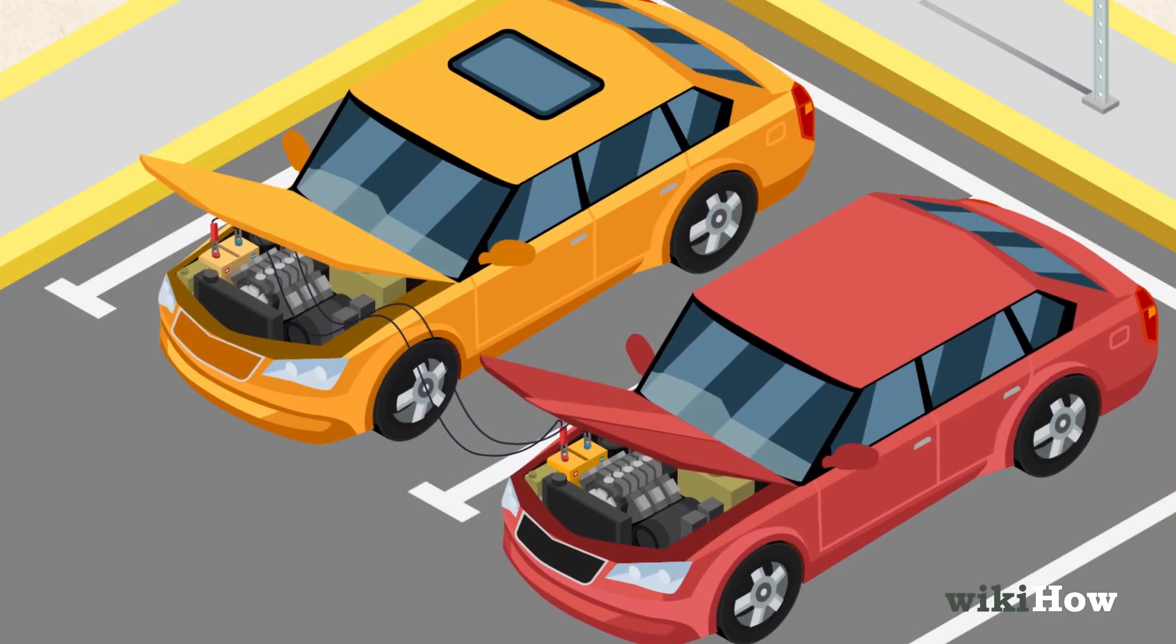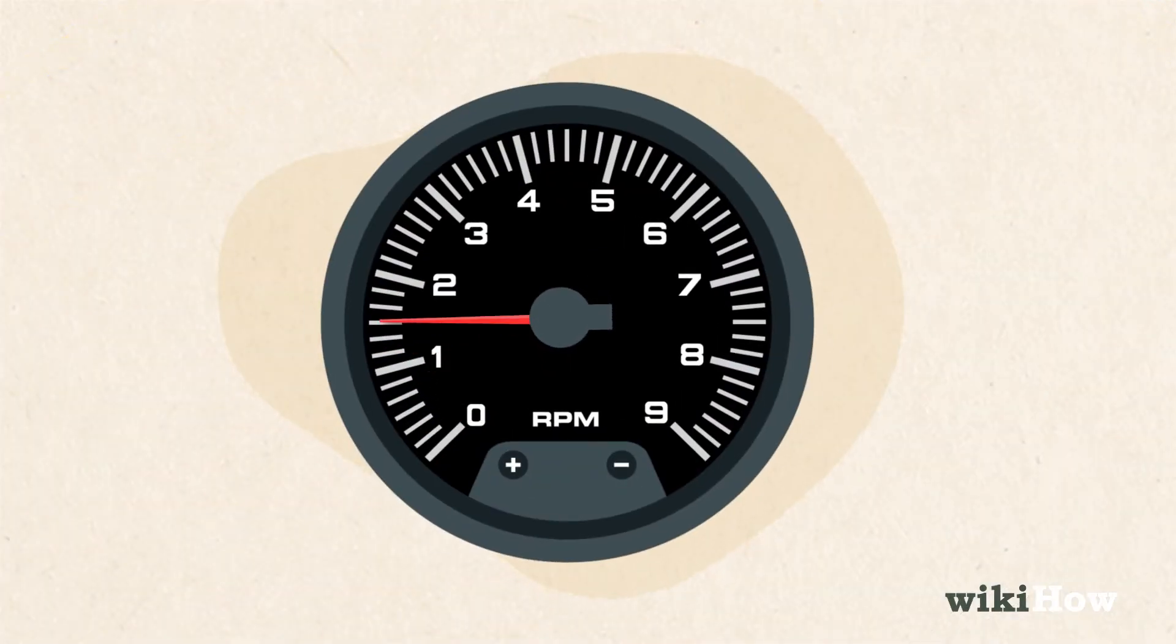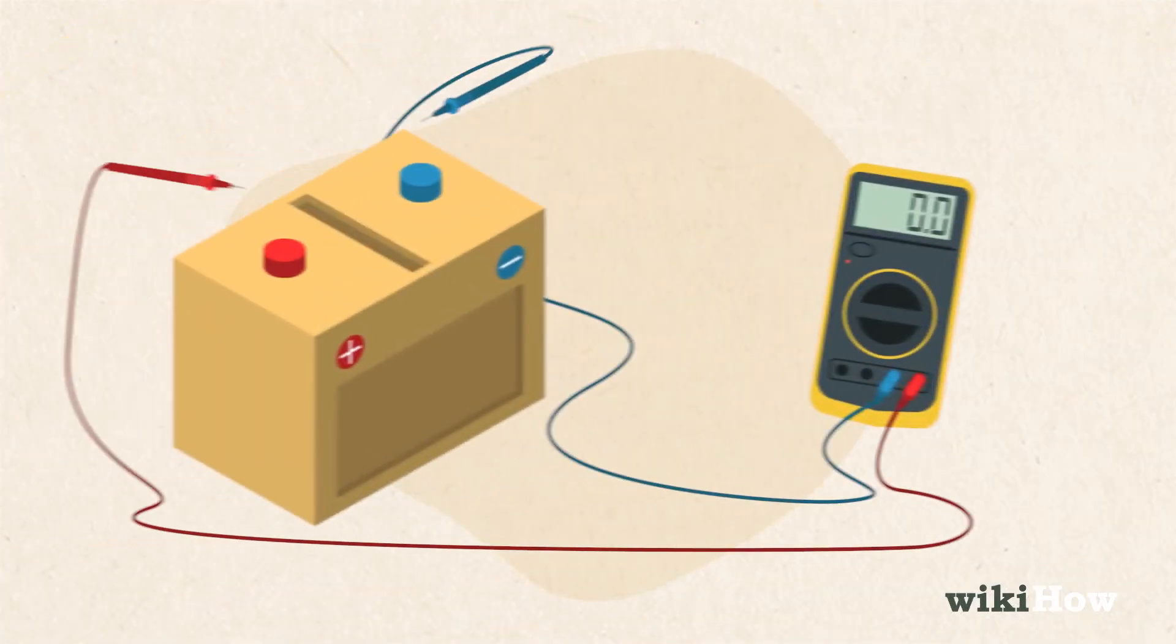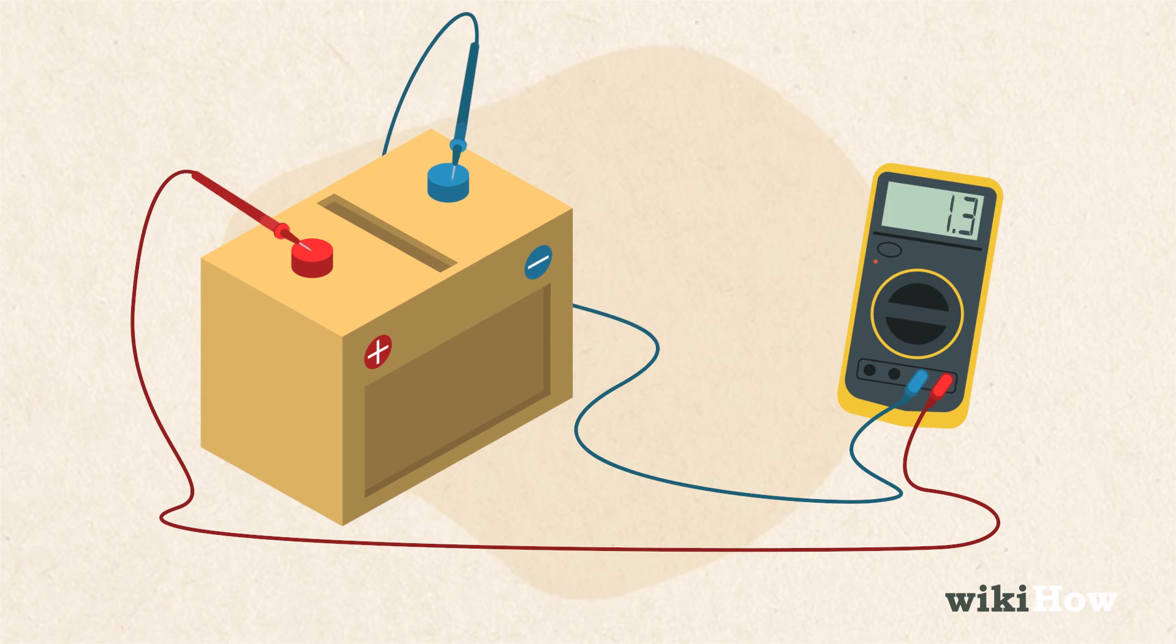Otherwise, have a helper start your car and rev the engine to 1500 RPM. Check the reading on the voltmeter again. The voltage should increase by 0.5 to 2 volts to around 13.6 to 15.8.